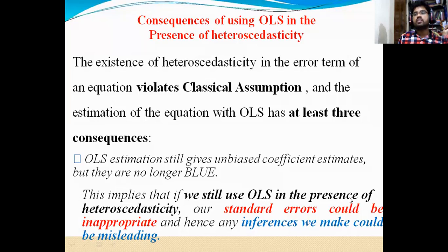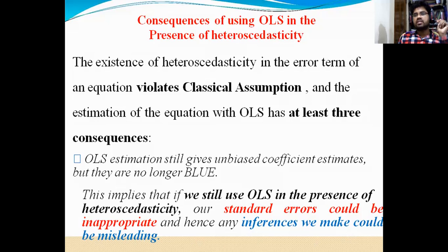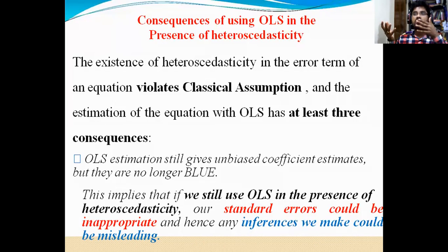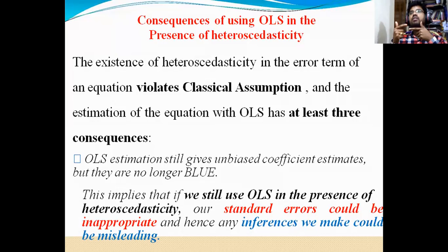This implies that if we still use OLS in the presence of heteroscedasticity — even when there is a heteroscedastic problem in our model — our standard errors could be inappropriate. When we are getting a heteroscedasticity problem, we do not want to use the OLS model; we can use other models. Hence, any inferences we make could be misleading. As I told you, if the T value is more than two, we can conclude that the independent variables are influencing significantly. But when we come to know that the standard values are wrong, we will not conclude by using the OLS method — whatever results we get when interpreting could mislead the theory or policy framework.